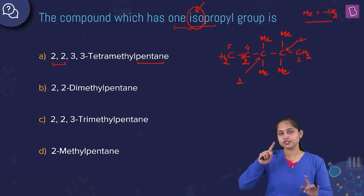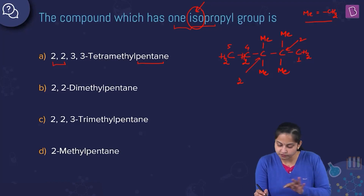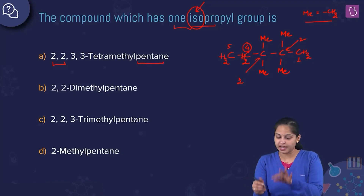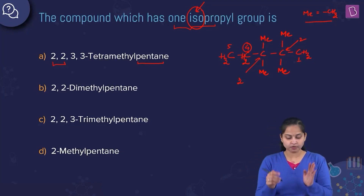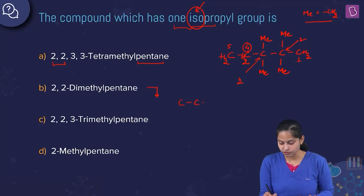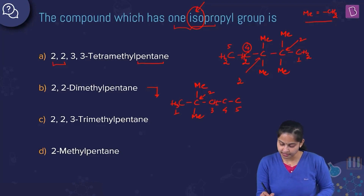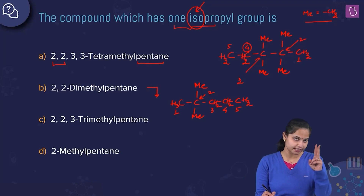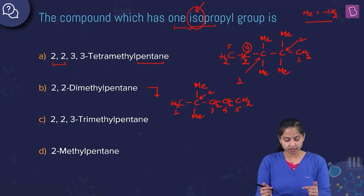For 2,2-dimethylpentane: at the second position, we have two methyl groups attached, giving structure CH3–C(Me)2–CH2–CH2–CH3. Again, the second last carbon atom does not have one single methyl group attached — it has none. So this is not an isopropyl group either. For 2,2,3-trimethylpentane: second position has two methyl groups, third has one — still not an isopropyl group.